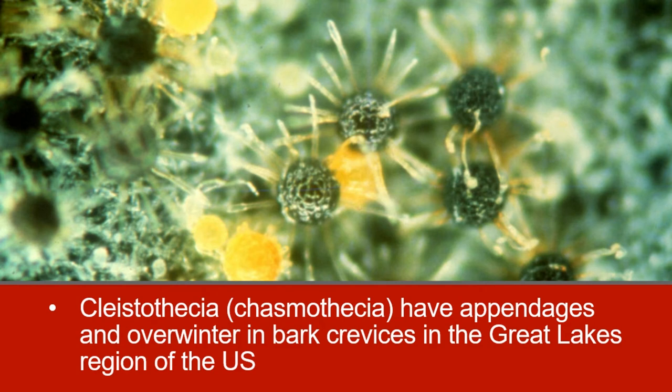This image shows Kleistothesia at various stages of maturity on the leaf surface. Mature Kleistothesia have appendages and are black. Immature Kleistothesia are yellow and brown and do not have fully formed appendages. Kleistothesia can overwinter in bark crevices but can also overwinter on leaf debris.